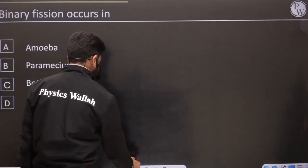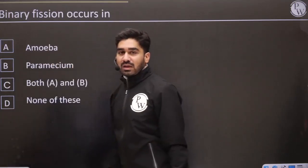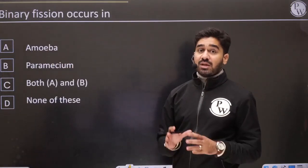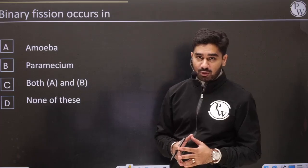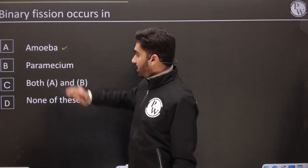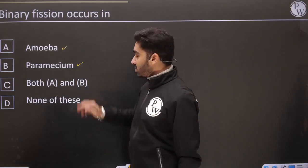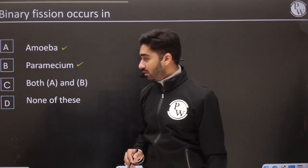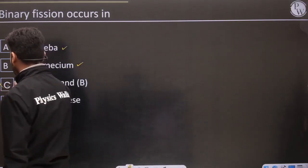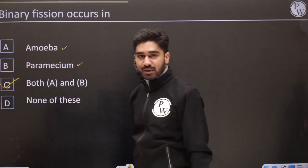First question: binary fission occurs in which organisms? Binary fission will be seen in Amoeba and Paramecium. So the correct option will be both A and B.